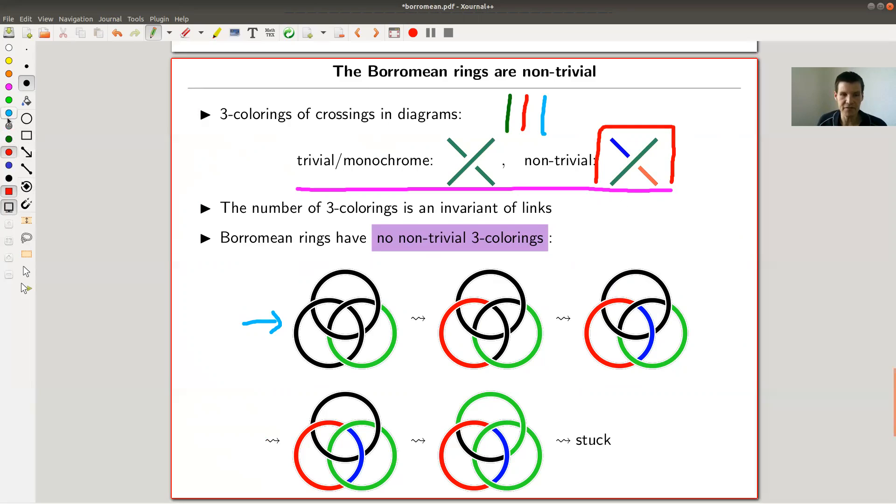It turns out, it's not very hard to show, just check the Reidemeister moves, that the number of three-colorings is an invariant of links. Of course, if I just have three disjoint circles, I can just color one blue, one red, and one green. Any kind of permutation of those colors, so I have definitely three cubed options to color three disjoint links. I have three colors and they're completely independent, I have no crossings at all. So I can have my 27 options to color them.